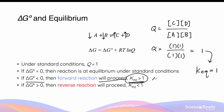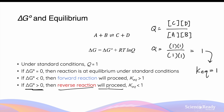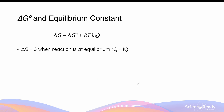Conversely, under standard conditions, if ΔG° > 0, the reaction is not yet at equilibrium. The forward reaction is non-spontaneous but the reverse reaction is spontaneous, so the system proceeds in reverse until equilibrium. As the reverse reaction proceeds, reactants A and B increase in concentration and products C and D decrease. Since Q starts at 1, by the time equilibrium is reached there will be more reactants than products, so the equilibrium constant will be less than one.